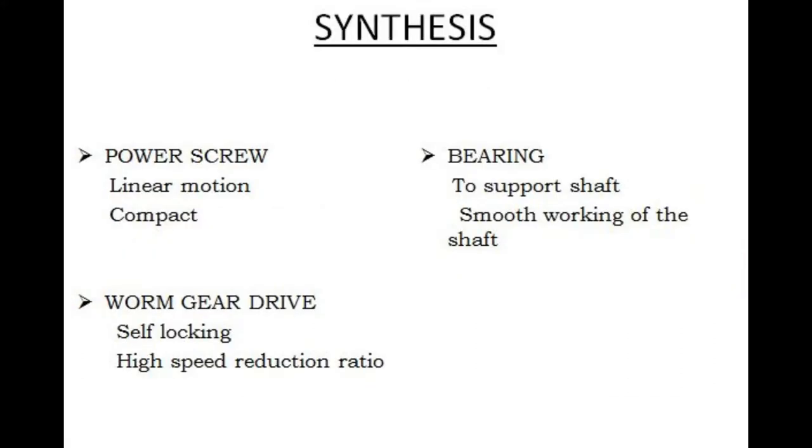Synthesis: First is power screw. It converts rotary motion into linear motion. It is compact in design. Second is worm gear drive. The main advantage of worm gear drive is it is self-locking and high speed reduction ratio. Bearing: The bearing is used to support shaft and smooth working of the shaft.